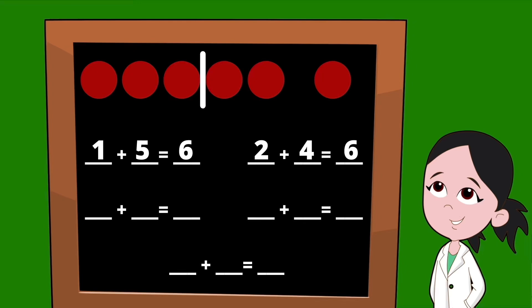Sliding that line over one more dot leaves us three dots on the left of our line. So this set of partners is going to start with the number three. On the right side of the line, there's also three dots. So our second partner is three. Three plus three equals six.